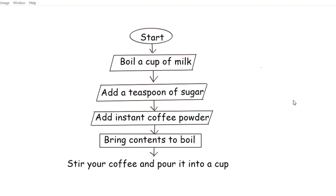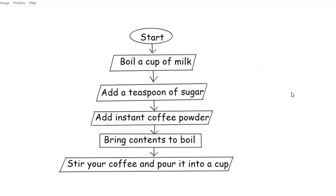Step 6 is the output step: stir your coffee and pour it into a cup — since it is an output step, make the symbol for the output step. Step 7: Stop — make the symbol for the last step. That is how children we have made a flowchart mentioning the steps required to make a cup of coffee.